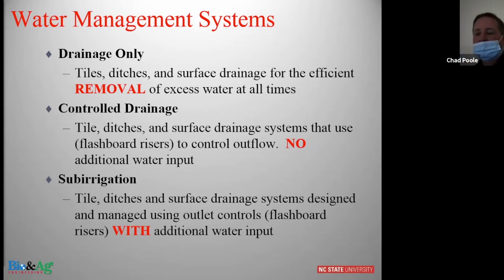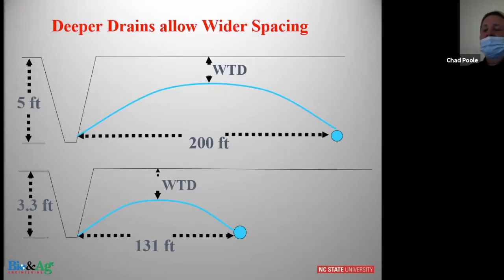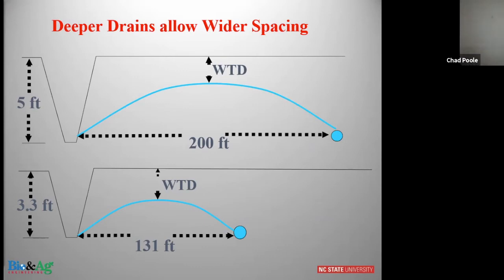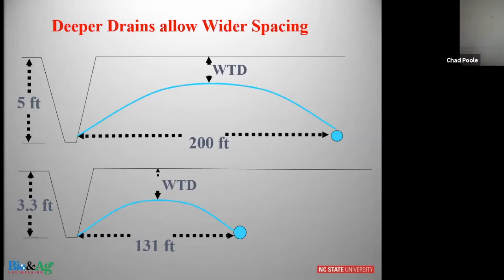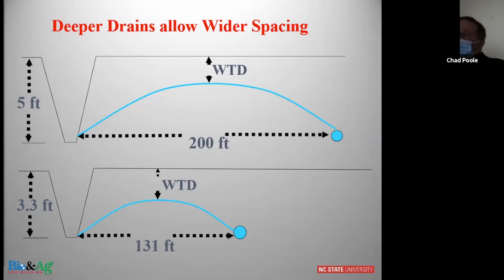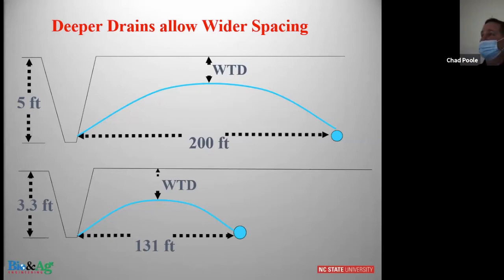In general, the deeper you can go with a ditch or a tile drain, the wider you can space them apart — from an economic standpoint that's the quickest way to save money. But you also need to look at the soil, because the last thing you want to do is put a tile drain in a tight clay where water cannot get to it. For example, if you had a ditch five foot deep those drains could go about 200 feet apart, but if that outlet is only 3.3 feet deep you've got to bring drain spacing to 131 feet to get the same level of drainage — you can imagine what that does to cost.